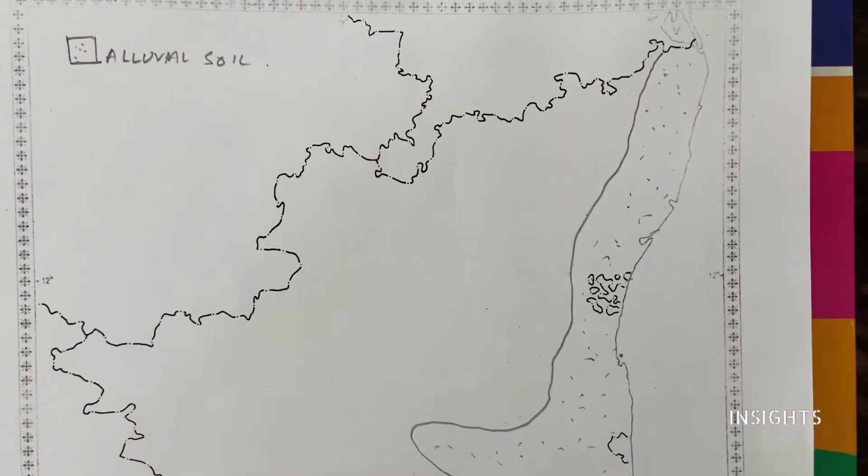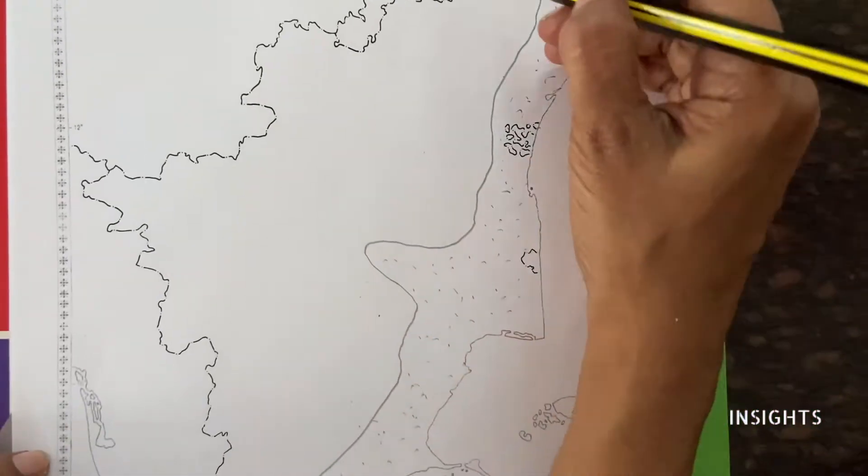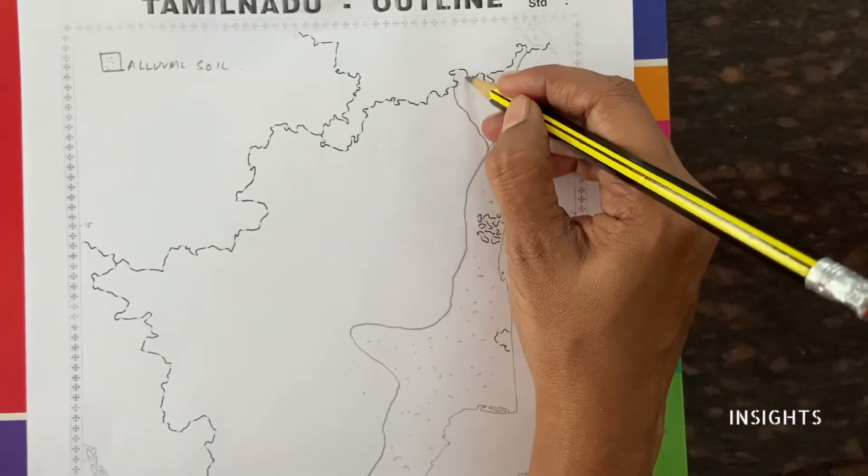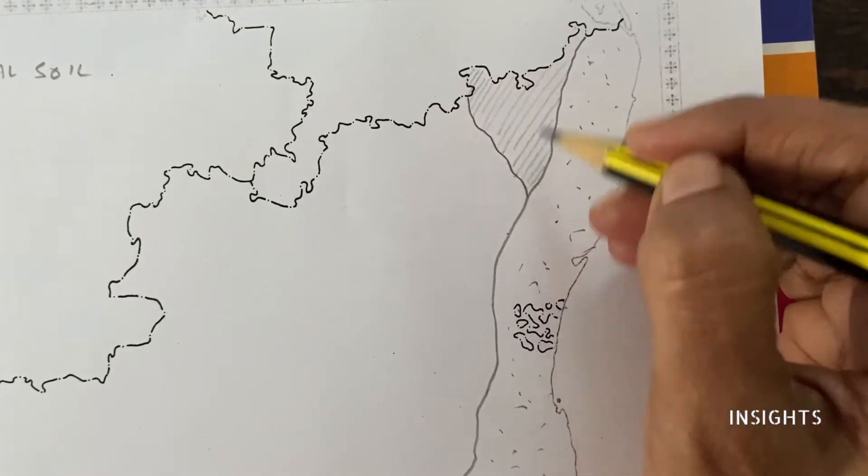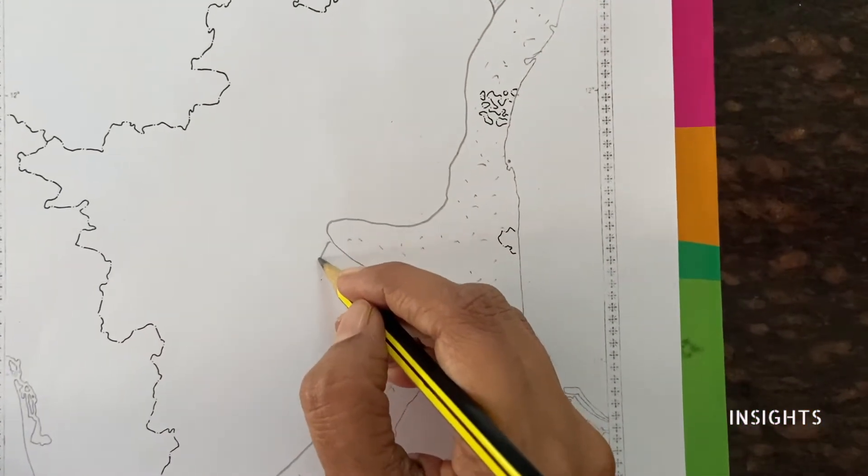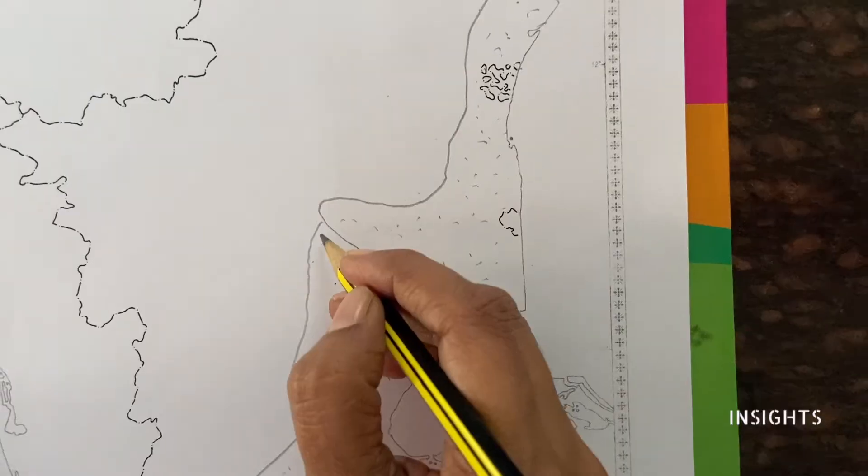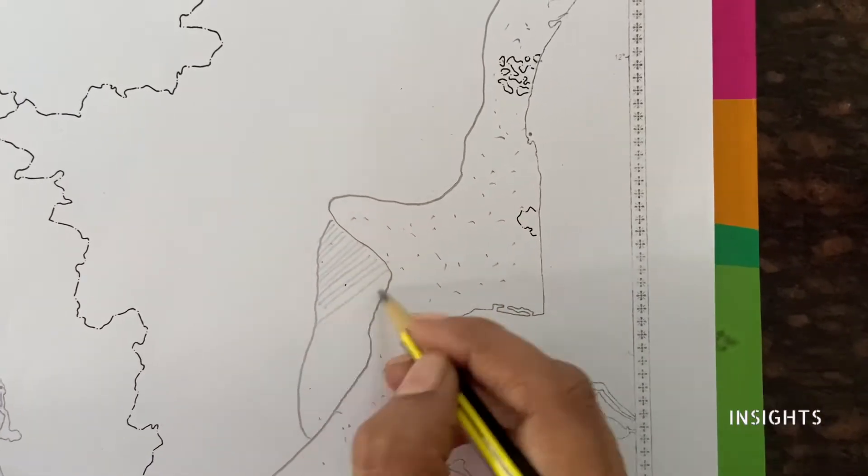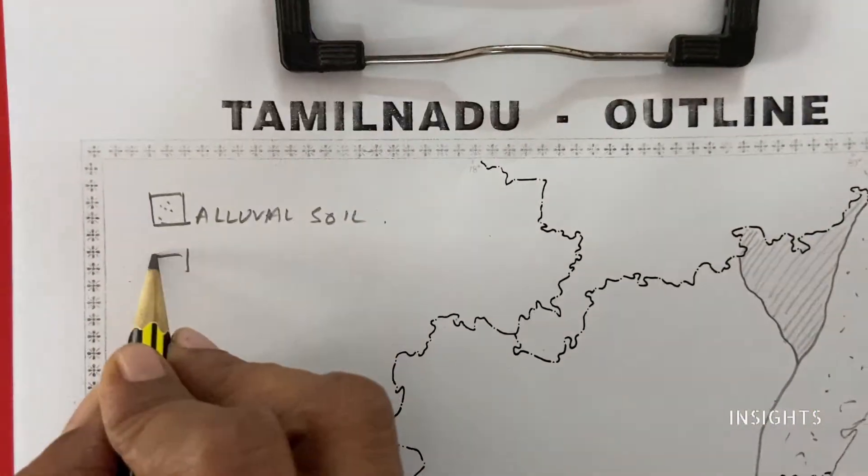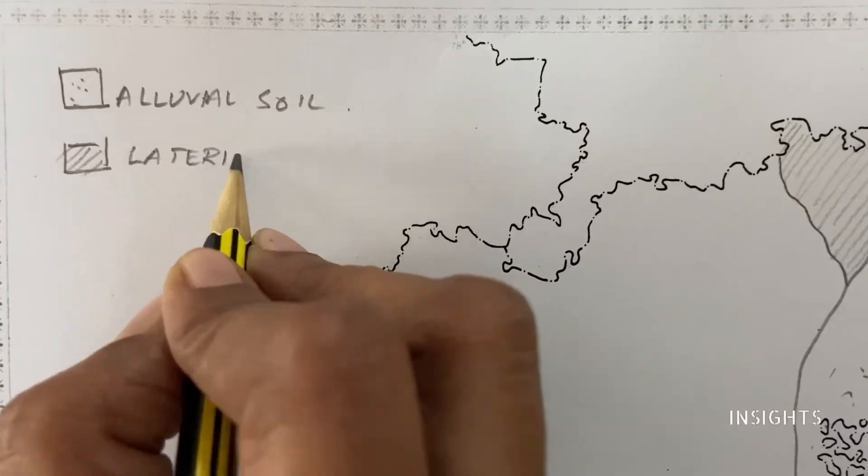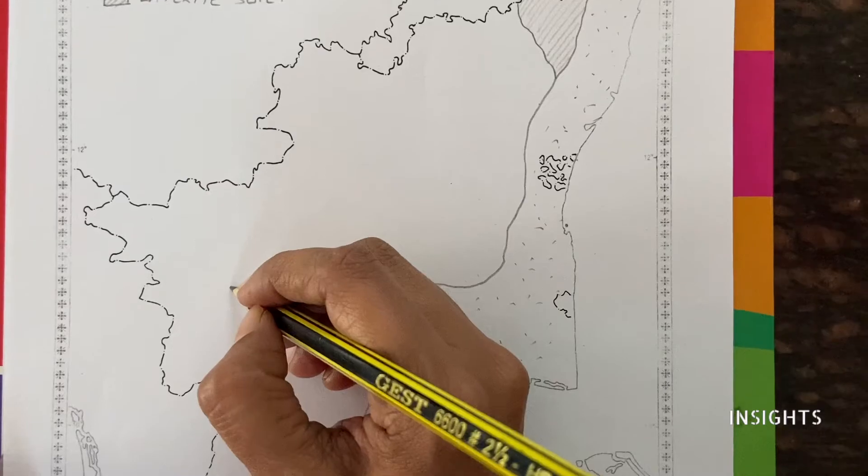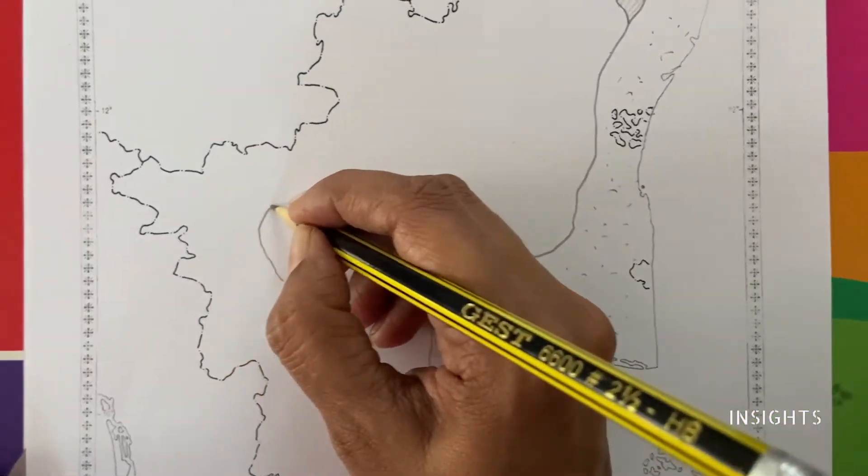Next after alluvial soil is laterite soil. Laterite soil is a dry type of soil. We will show the lines here. Again we have to write in the key.